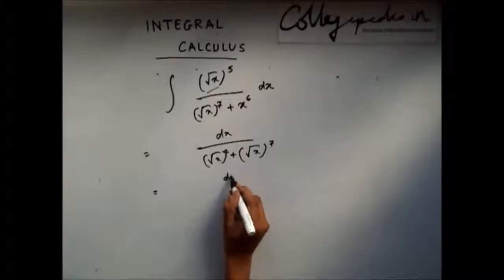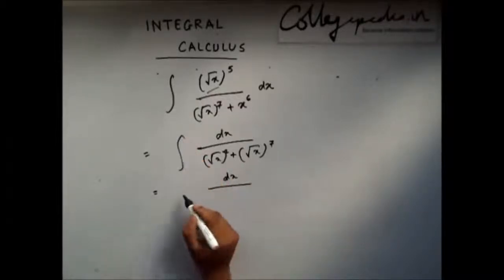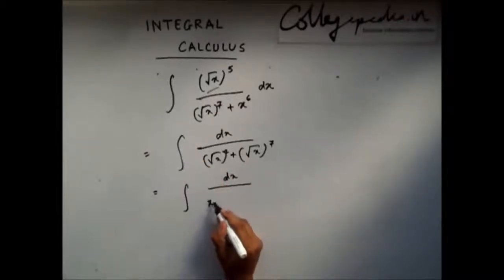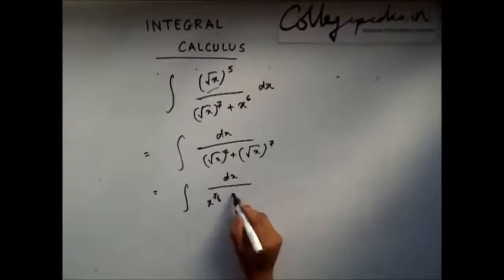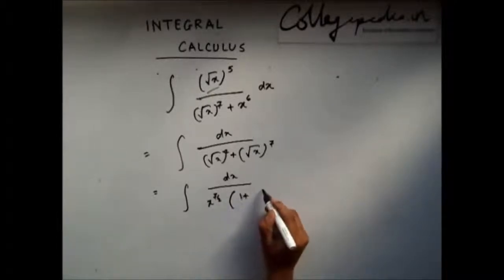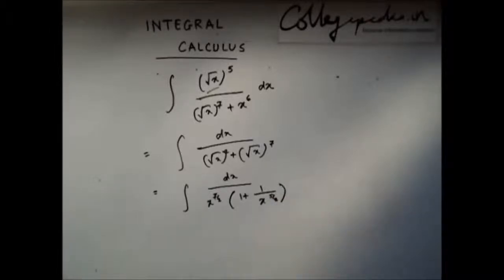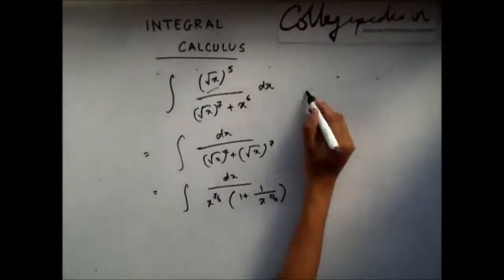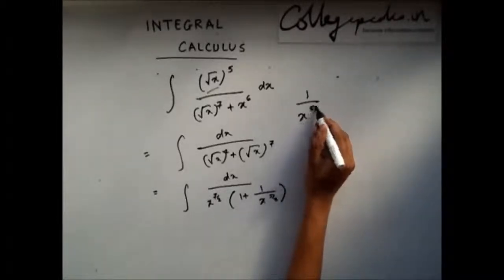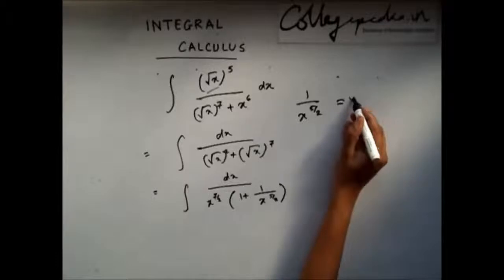Now what I will do is take x to the power 7 by 2 common. So I will be left with this. Now what I will do is take 1 x to the power 5 by 2 as y.